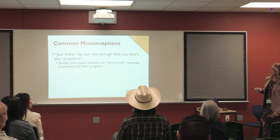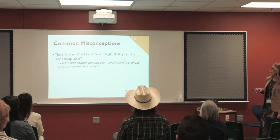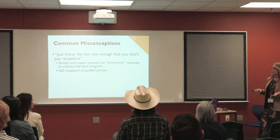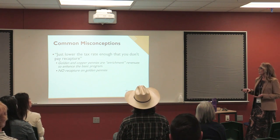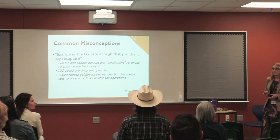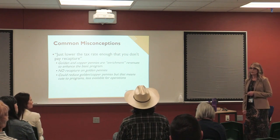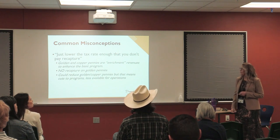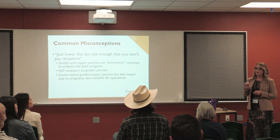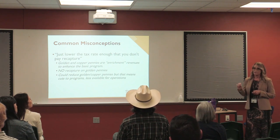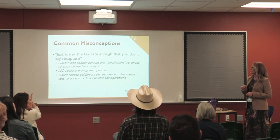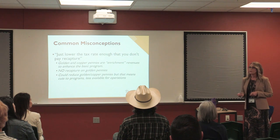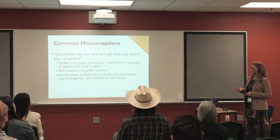This is where you do have flexibility — the golden and copper pennies. There's no recapture on golden pennies, so this is money, and in some years it includes state aid. You're leaving money on the table if you don't have those golden pennies. The pennies are guaranteed to generate a certain dollar amount per WADA, and if your values don't generate that dollar amount on your own, the state will help you get there. We could reduce the golden and copper pennies, but in full transparency that means less money for programs and budget cuts.